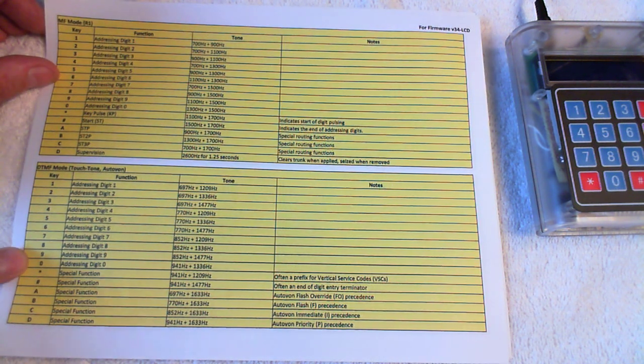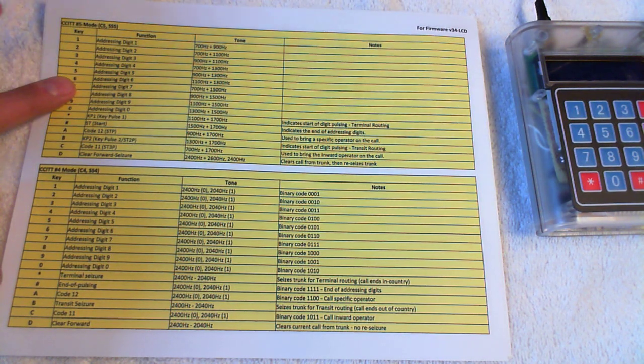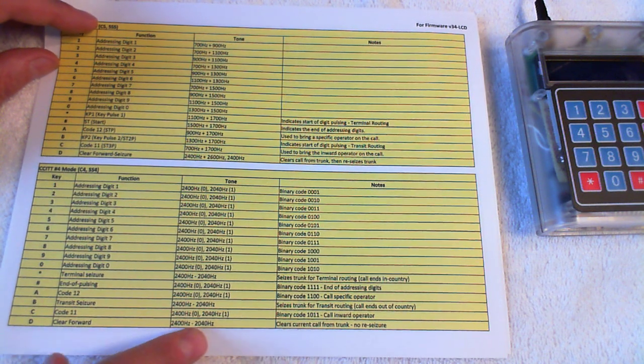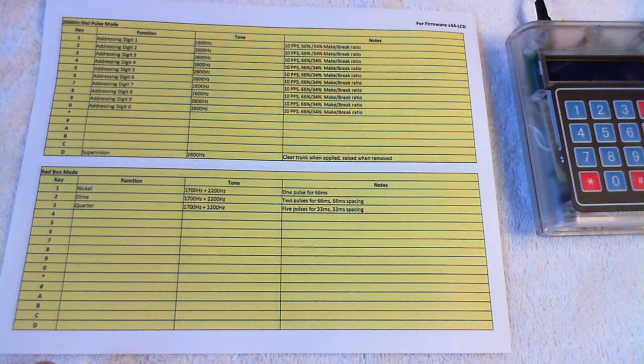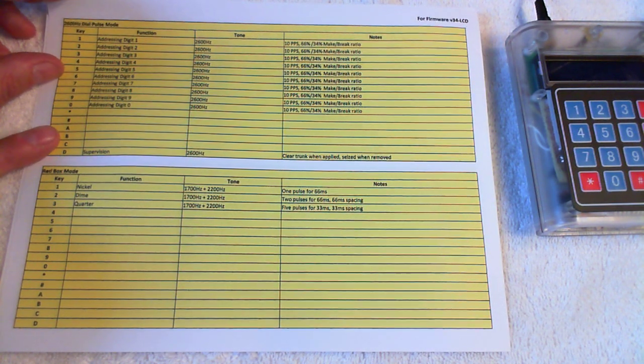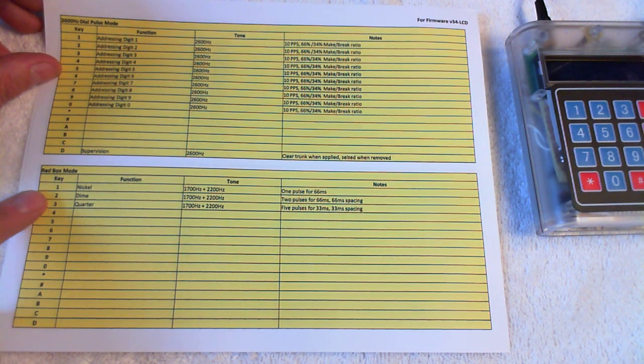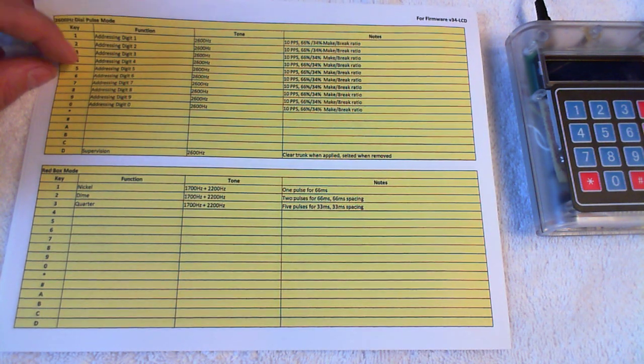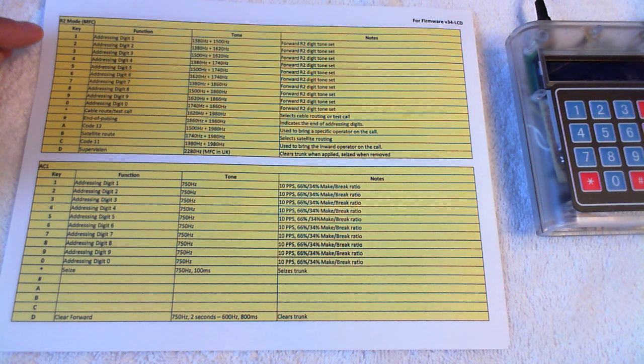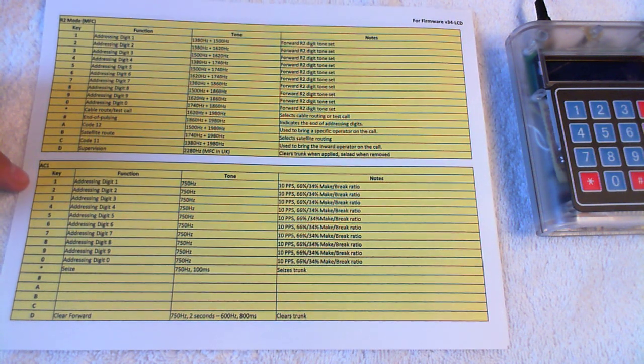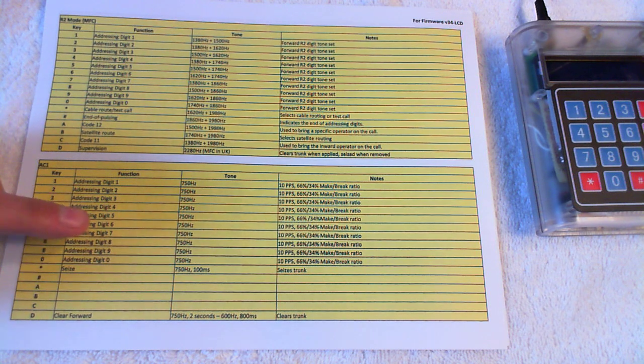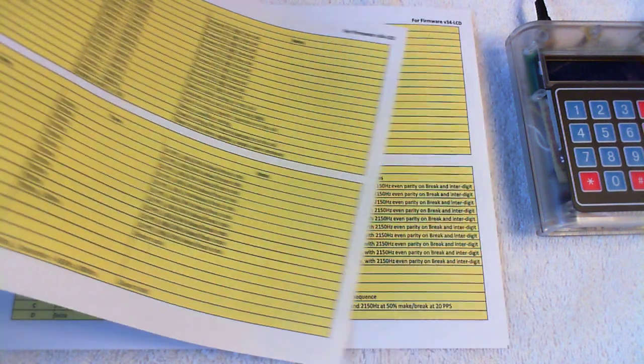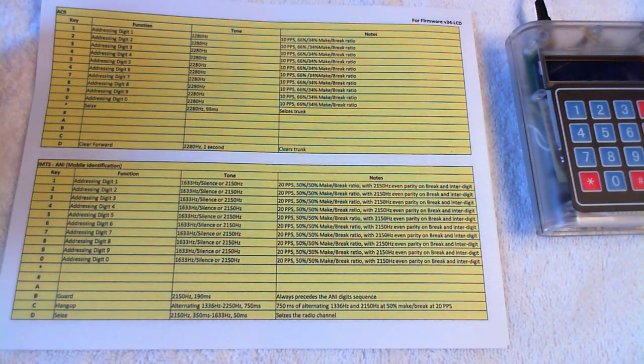So we've got one for the R1 mode, one for DTMF, one for the C5 mode, one for the C4 mode, again with quite a bit of detail about the tone configurations. This is the 2600 dial pulse mode, the red box mode, very simple, just three keys active for the nickel-dime quarter in that mode. This is the R2 MFC mode, the UK AC1 mode, specific tones and timings indicated here based on the best information I've been able to find. The AC9, the UK AC9 mode, which is a more modern dial pulse mode.